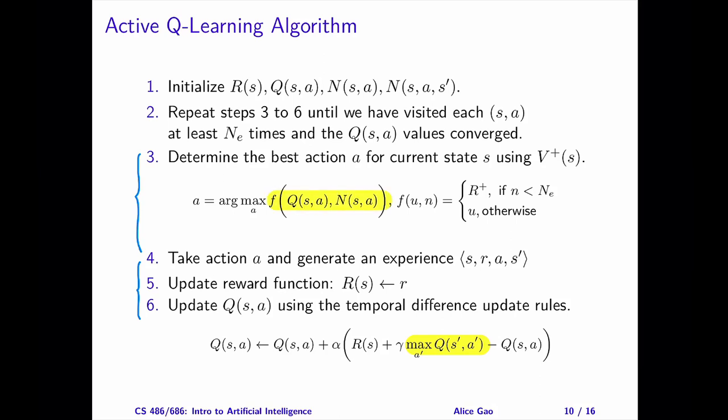If the agent hasn't tried the state action pair at least N_e times, then we assume that the Q value is R plus, which is the maximum possible reward we can obtain in any state. Having R plus as the reward makes the state action pair really attractive to the agent. Once the agent has tried the state action pair at least N_e times, we will use the current Q value instead.